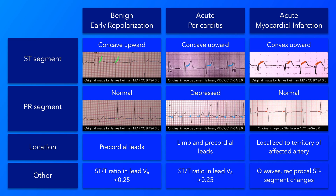With acute myocardial infarction, other findings may be present such as Q waves, reciprocal ST segment changes, loss of R wave height, or poor R wave progression.